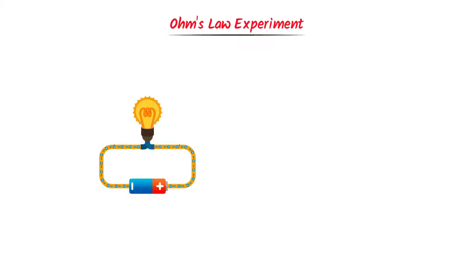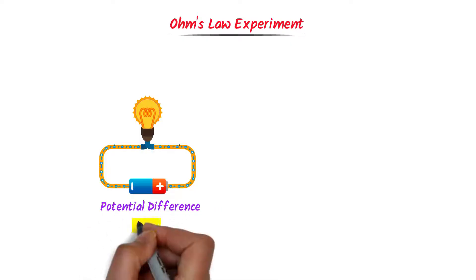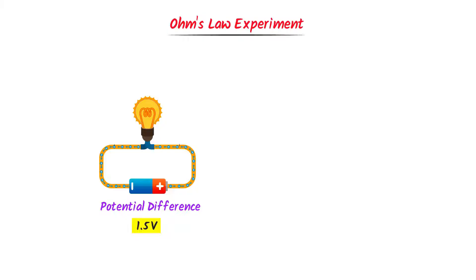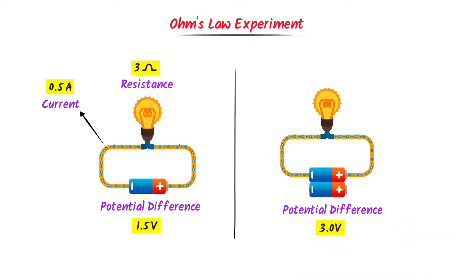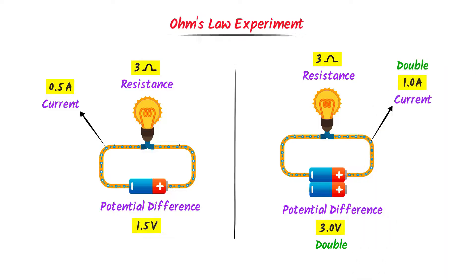Let me explain Ohm's Law with a real-life example. Consider this electric circuit where the potential difference of the battery is 1.5V. We use a bulb as a resistor and its resistance is 3 ohms. When we switch on the circuit, we observe that 0.5A of current passes through the circuit. Now I am going to use two batteries having 3V potential difference — I double the potential difference but keep the resistance at 3 ohms. When I switch on the circuit, we observe that 1A of current passes through. This shows that if we double the potential difference, the electric current is doubled. Therefore, current is directly proportional to the applied potential difference, and Ohm's Law is 100% correct.